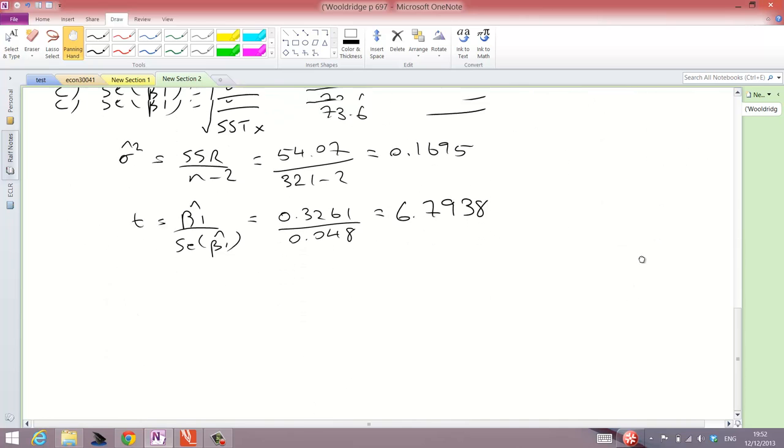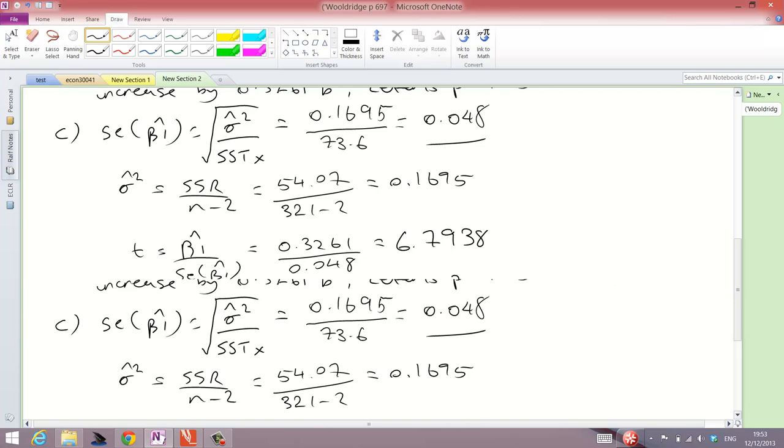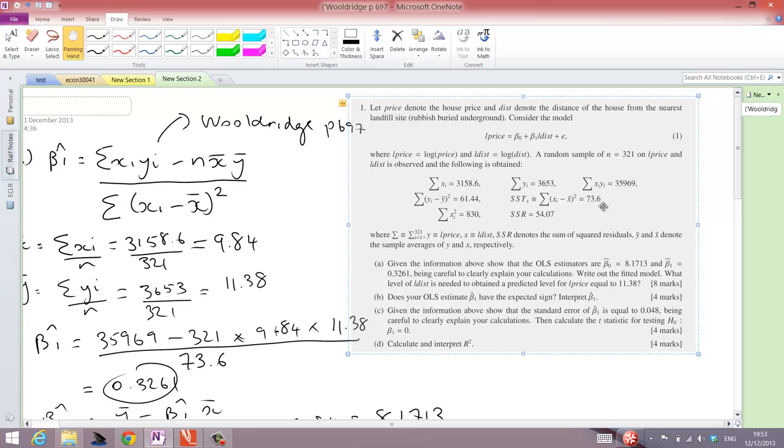The formula for R squared is the explained sum of squares divided by the total sum of squares, which is 1 minus the residual sum of squares over the total sum of squares. So 1 minus 54.07 divided by 61.44. Where did that come from? Well, that came from the question, the total sum of squares there.